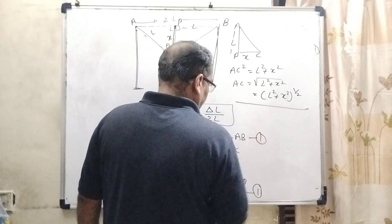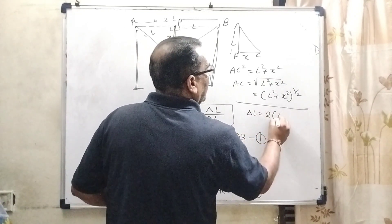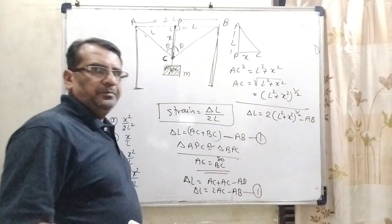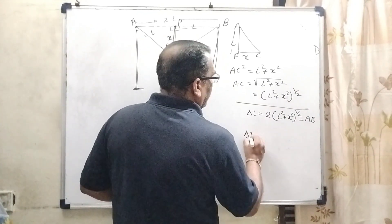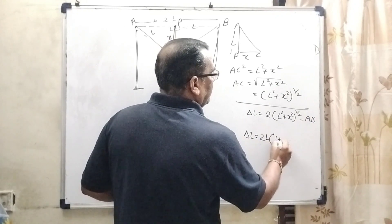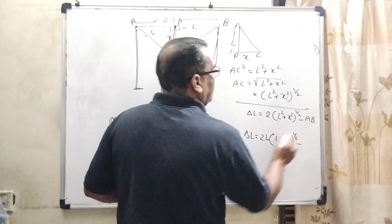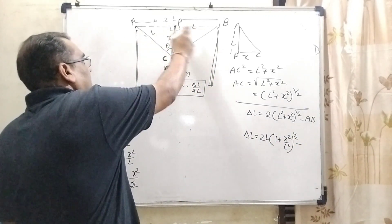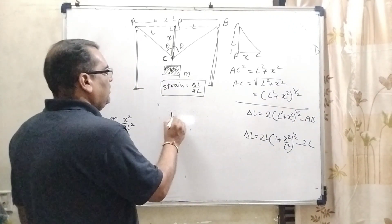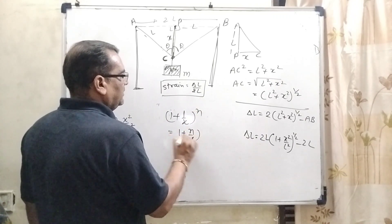Now substituting this value of AC into equation number two: ΔL = 2(L² + X²)^(1/2) − AB. Now L² is factored out from the root, giving ΔL = 2L · (1 + X²/L²)^(1/2) − AB. The value of AB from the diagram is 2L. By using the Binomial theorem, (1 + X/N)^N can be approximated as 1 + N·(X/N).